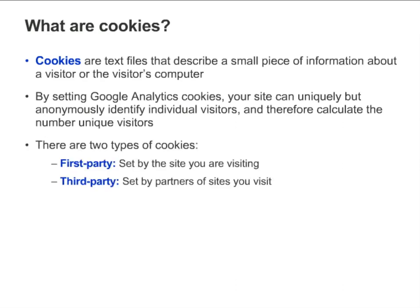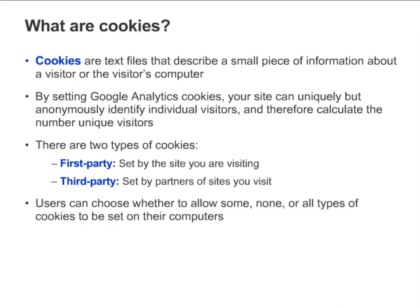There are two types of cookies. First-party cookies are set by the domain being visited, and only the website that created a first-party cookie can read it. This is the kind of cookie used for Google Analytics tracking. Third-party cookies are set by third-party sites — basically sites other than the site being visited. Users can choose whether to allow some, none, or all types of cookies to be set on their computers.